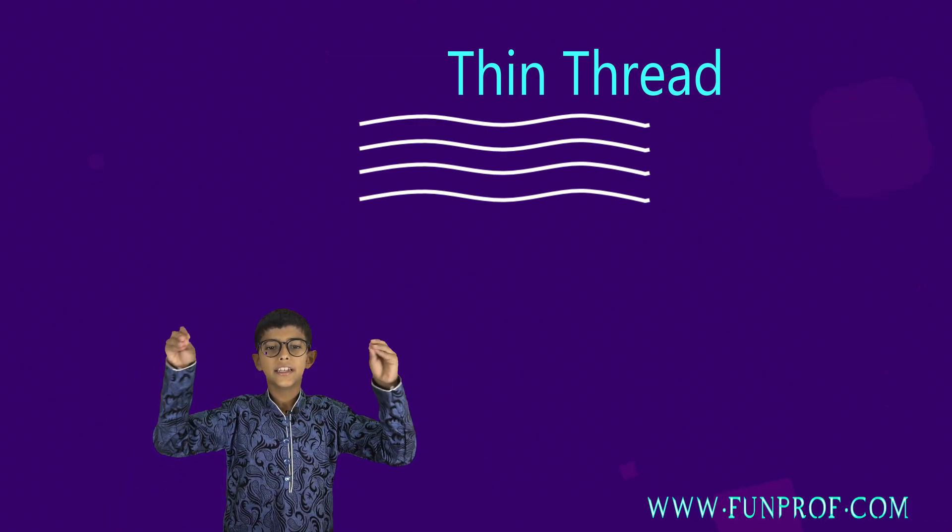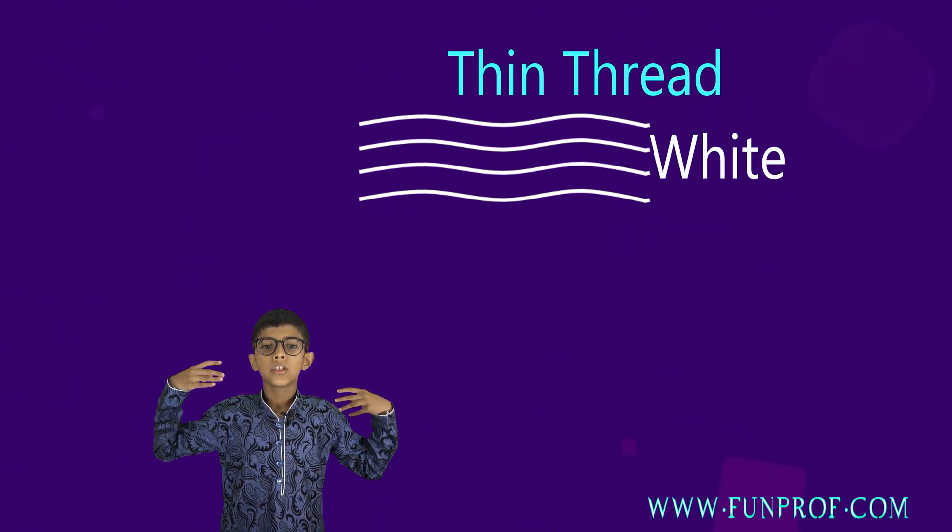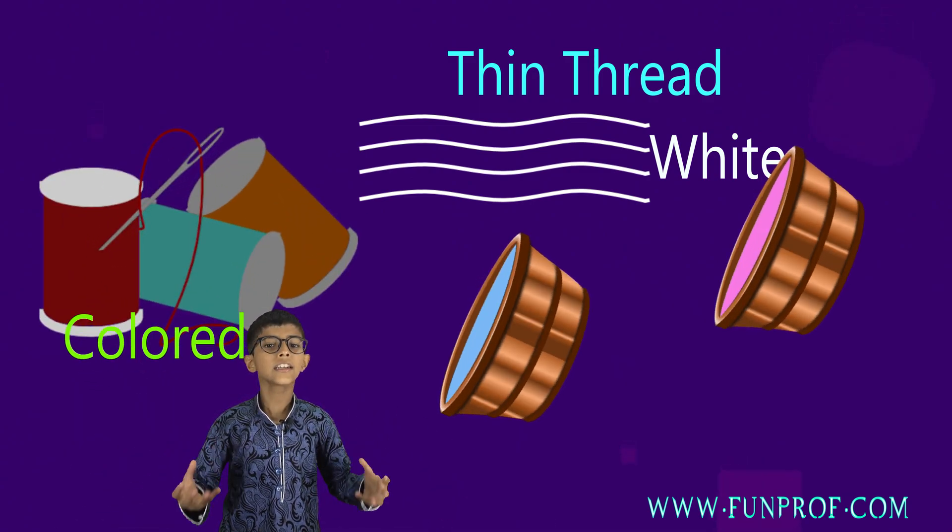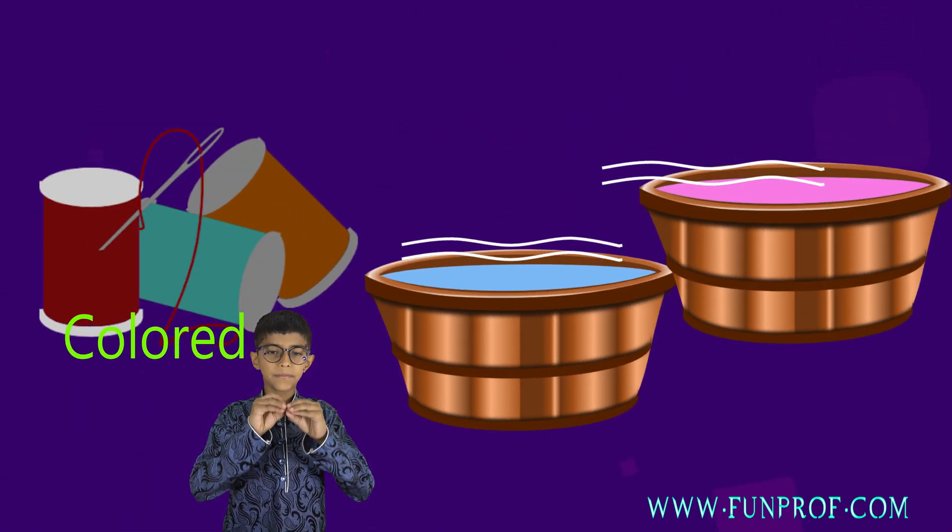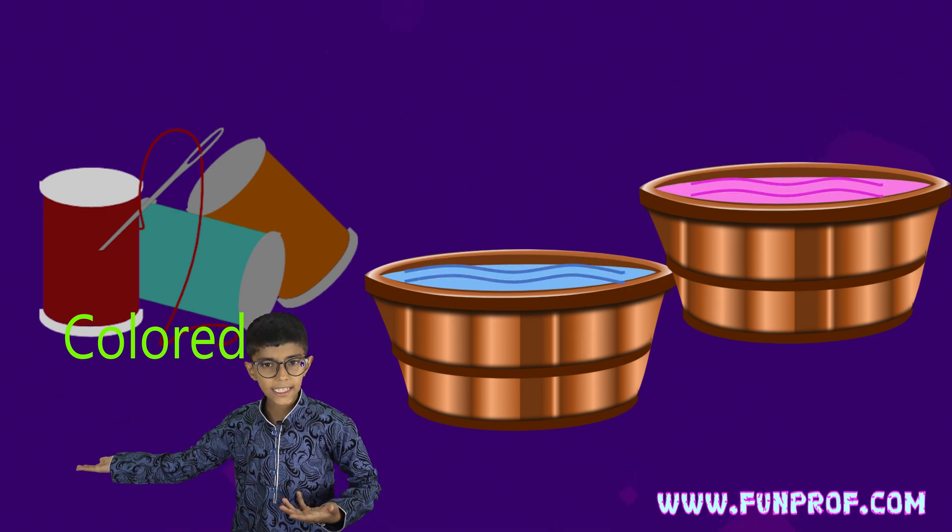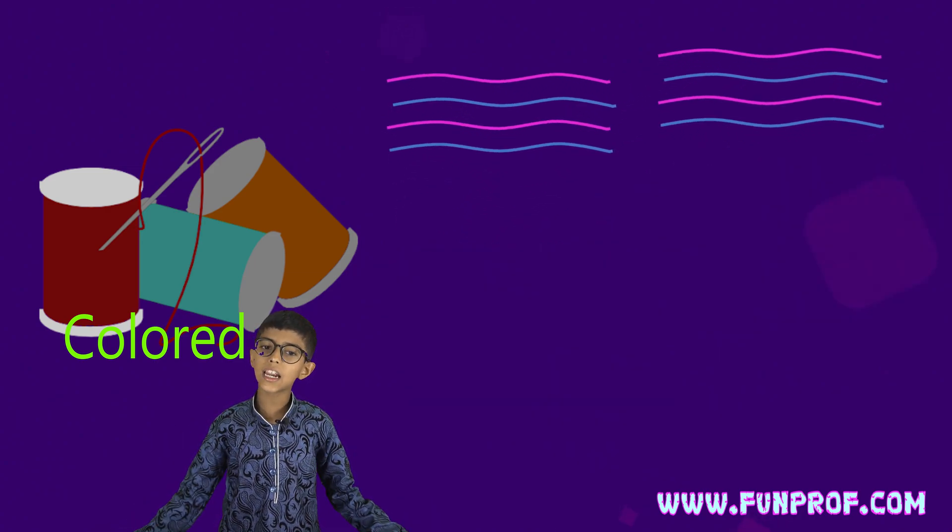This thread is white but at home the thread is colored. How is that? This thread is then put into a colored dye like this so that now it's colored.